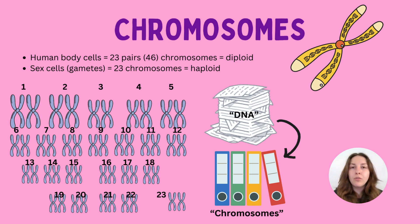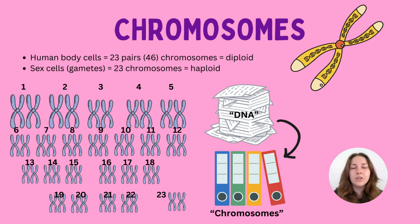Chromosomes are only found in eukaryotic cells. Remember that prokaryotes do not have a nucleus — things like bacteria, for example. But plants and animals like ourselves, we do have chromosomes because we are eukaryotes. We have that nucleus.